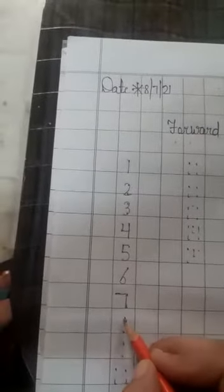What is this? 5. What comes after 5? 6. What comes after 6? 7. What is this? 7. What comes after 7? 8. What is this? 8. What comes after 8? 9. What is this? 9.